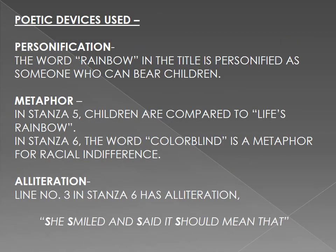The poetic devices used — the figures of speech — give the poem not just a literal meaning but a deeper meaning. The very first poetic device appears in the title itself: 'Children of the Rainbow.' Here, the word 'rainbow' is personified — it is treated as somebody who can bear children, and thus humanized. That is called personification. Another poetic device used is metaphor. In stanza 5, children are compared to life's rainbow. In stanza 6, the word 'colorblind' is a metaphor for racial indifference.